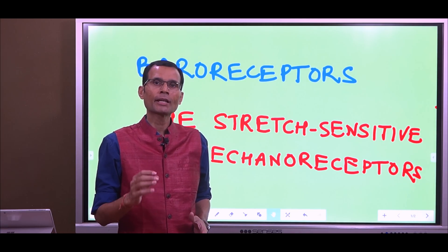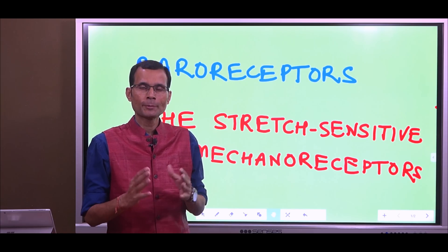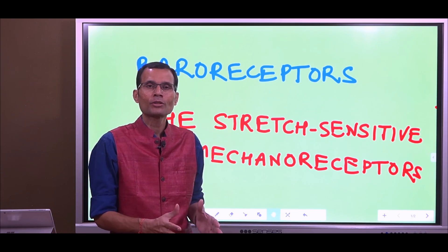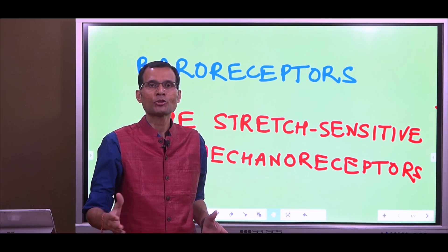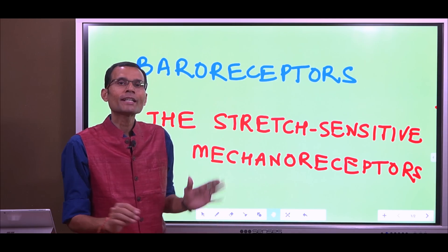Baroreceptors are involved in the regulation of blood pressure. We are specifically talking about the baroreceptors in the carotid artery and arch of aorta. Baro is a misnomer here.